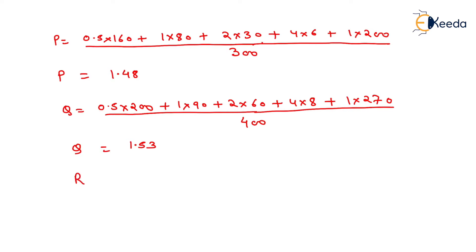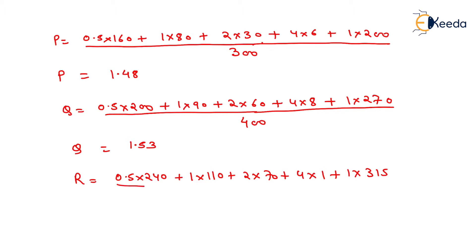Similarly, we can determine the utility value of road R by multiplying: 0.5 × 240 + 1 × 110 + 2 × 70 + 4 × 1 + 1 × 315, and dividing this by the length of road R, which is 500 km. After solving this, we get the utility value for road R equal to 1.378.